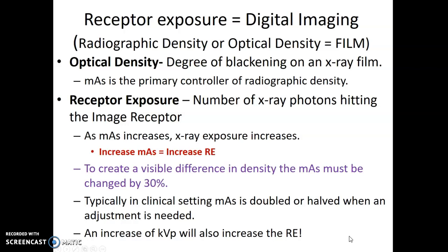Receptor exposure is used in digital imaging. Optical density is a film term — it's considered the degree of blackening on an x-ray film, and MAS was the controller there. Receptor exposure is simply the number of x-ray photons that hit the image receptor — how much of that x-ray beam travels through the patient and hits your image receptor. As MAS increases, the x-ray exposure increases. To create a visible difference in density, the MAS must be changed by at least 30%. In the clinical setting, if my exposure is low I tend to double my MAS; if high, I half it. If you increase your KVP, that also increases receptor exposure because higher KVP means higher penetration getting through that patient.